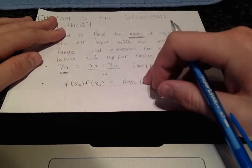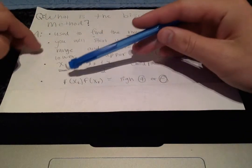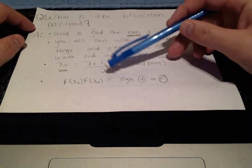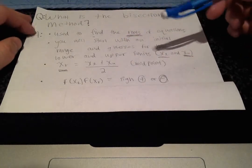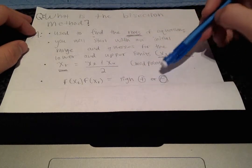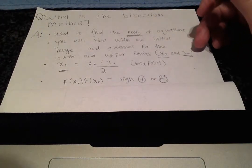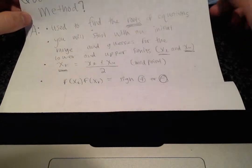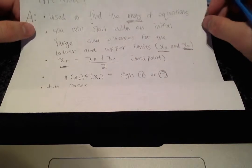All right, and you'll also need to test the value of f of xl multiplied by f of xr. And you'll need to find out the sign of the product here. And it'll either be positive or negative. Those are the only two possibilities. And based on the sign, you'll decide whether you'll continue searching to the left or to the right of the range that you cut in half.